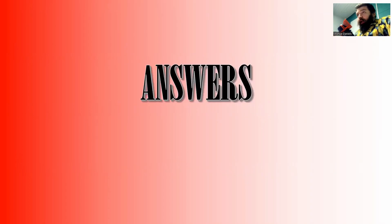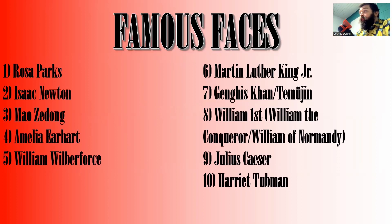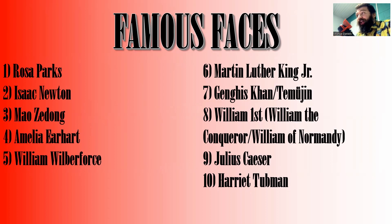Time's up — that marks the end of the January 2024 quiz. Get ready to mark — we're on to the answers, starting with category one, Famous Faces. Number one was Rosa Parks, number two was Isaac Newton, number three was Mao Zedong, number four was Amelia Earhart, number five was William Wilberforce, number six was Martin Luther King Jr., number seven was Genghis Khan (also accept Temujin), number eight was William the First (also accept William the Conqueror or William of Normandy), number nine was Julius Caesar, and number ten was Harriet Tubman.